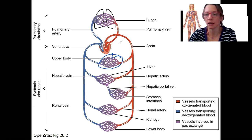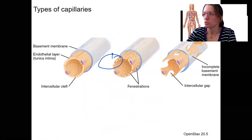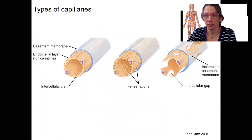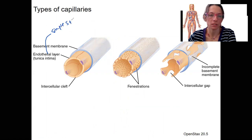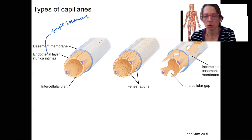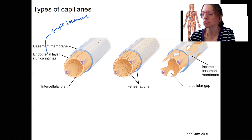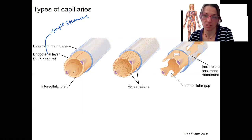There are three types of capillaries. They all have a single layer of endothelium — one cell thick, simple squamous epithelium, a tunica intima — surrounded by a basement membrane, which is just kind of proteins and stuff. So that's what they all have in common, but there are three different types, and some are more porous than others.